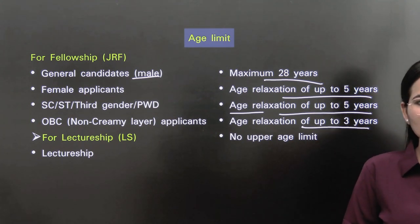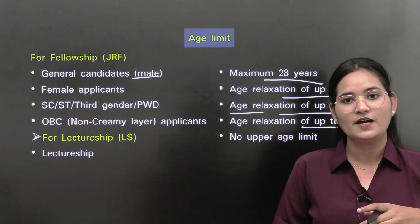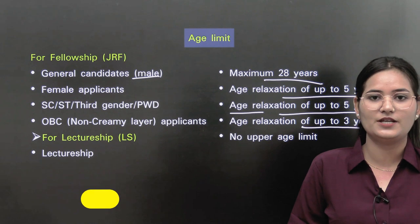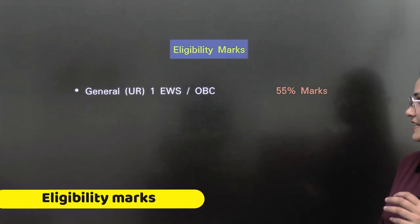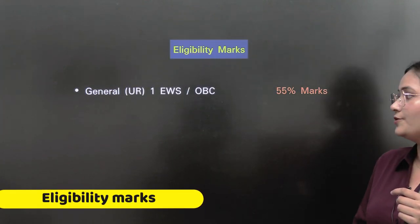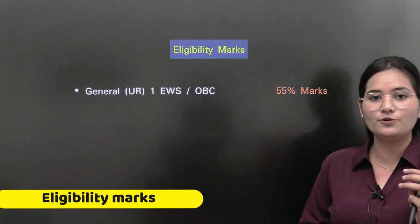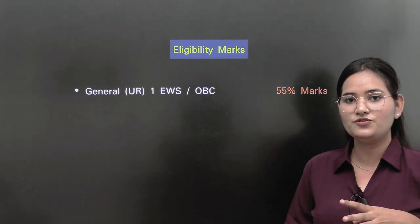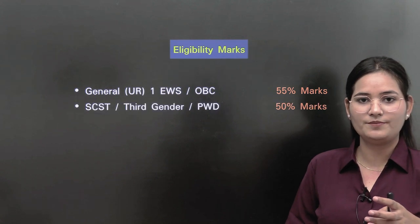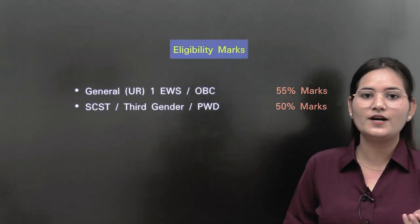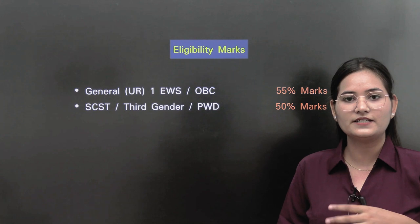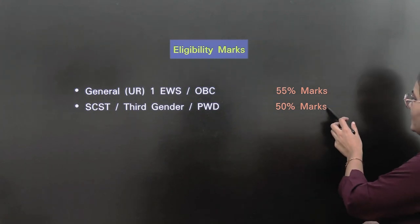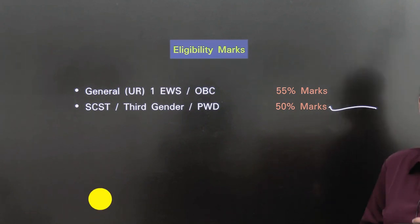In case of lectureship, there is no upper age limit — you are always eligible for CSIR NET examination. Regarding eligibility marks: if you are a general, EWS, or OBC category candidate, you should have passed your post-graduation with 55% marks. If you are SC, ST, third general, or PWD category, you should have passed with 50% marks.